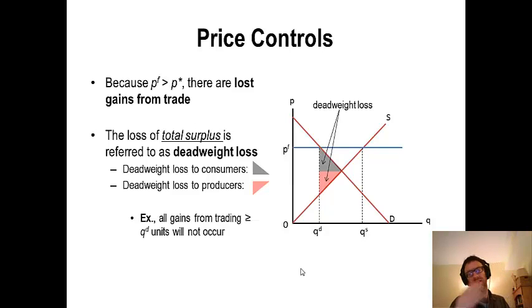What does that do? That means that quantity demanded is now our limiting factor. It doesn't really matter how much quantity supplied is. We're only going to trade as many units as quantity demanded is, because quantity demanded is less than quantity supplied. This is very similar to the previous case with the price ceiling. We lose the ability to engage in trade in those commodities in between QD and Q-star.